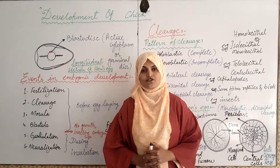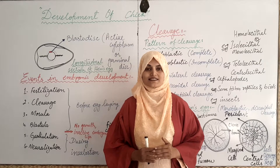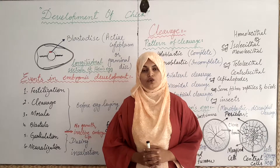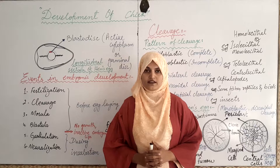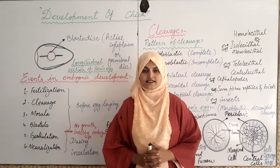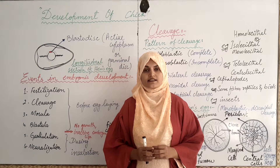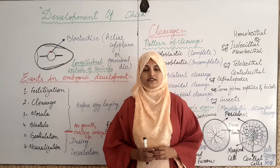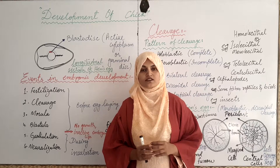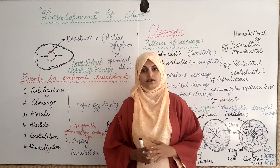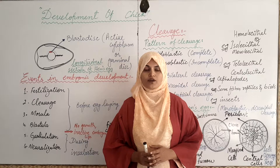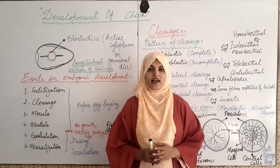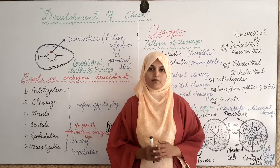Before the secondary meiotic division, fertilization takes place in the upper part of the oviduct, where two cells are united together — that is, male and female sex cells unite with each other — in the result of which a single diploid cell is formed which is termed as zygote. When the zygote is formed, the process of secondary meiotic division takes place and the polar bodies are formed, which later on degenerate, and the mature ovum passes into the oviduct.